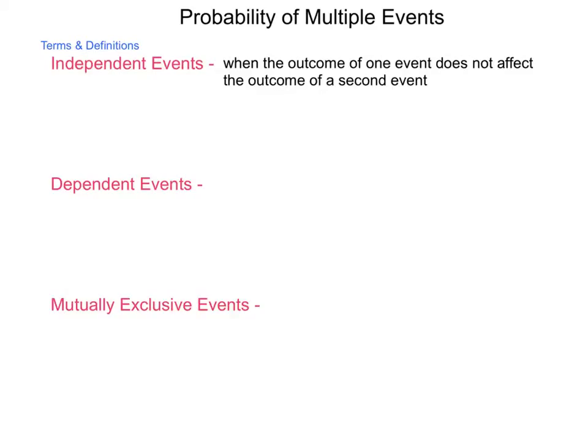Now, dependent events is when the outcome of one event does affect the outcome of a second event. For instance, if you knock down a domino and you have a set lined up, that event occurring changes the likelihood of other ones falling down. Now, it doesn't mean that all of them are going to fall down, but the likelihood increases.